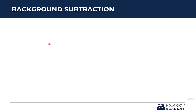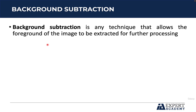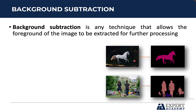Hello and welcome to this lecture, where you are going to learn some concepts about what background subtraction is. Background subtraction is any technique that allows the foreground of the image to be extracted for further processing. The background of this image has several trees and the horse is in the foreground. The goal of this technique is to identify what is the background and what is the foreground, and it is possible to perform the extraction according to this example. If you want to identify or recognize objects, you can disregard all the background of the image to extract only the object.